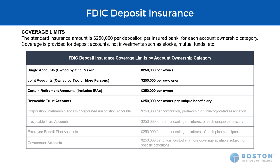For certain retirement accounts like IRAs, a client might have a traditional IRA, a Roth IRA, a SEP account, or a SIMPLE IRA. All of those would be combined, and one $250,000 amount would apply to the total.